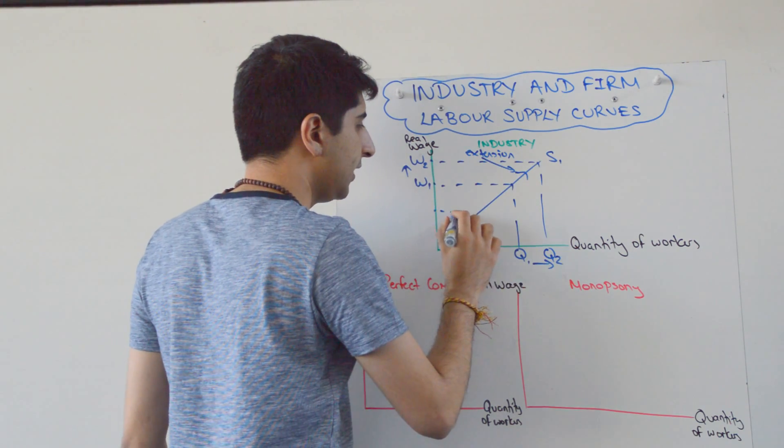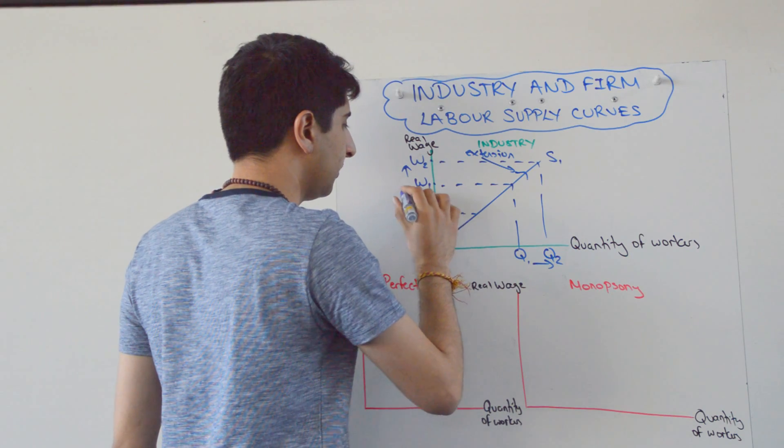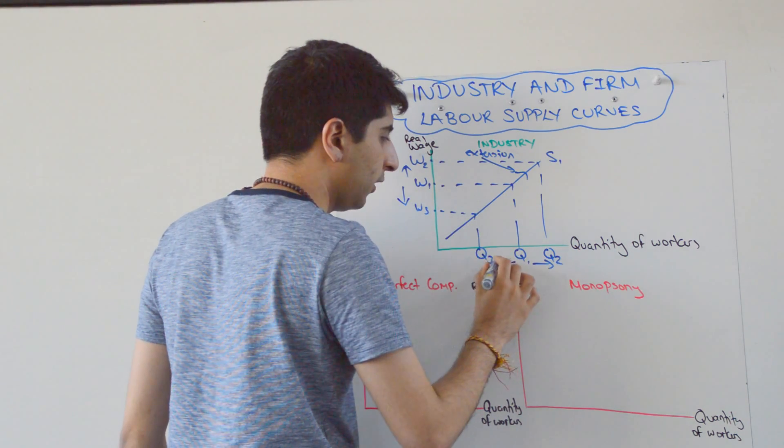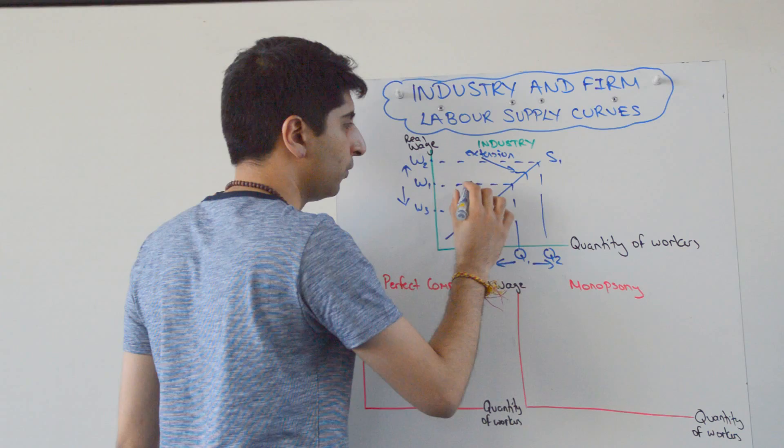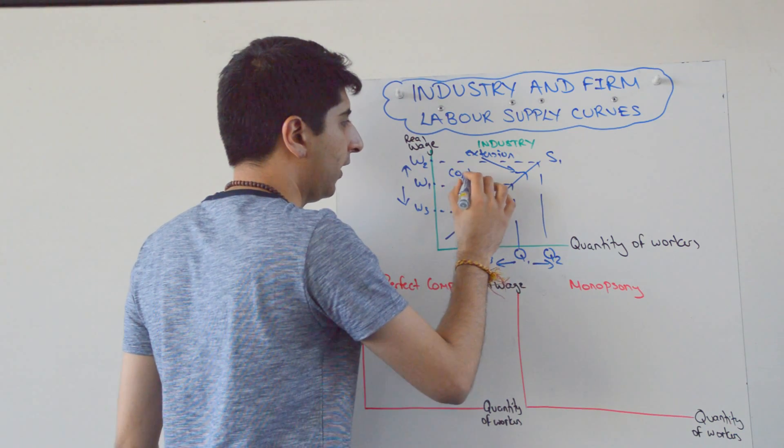And similarly, if wages decrease from W1 to W3, there will be a contraction in labour supply from Q1 to Q3. We move down the supply curve, and that is a contraction.